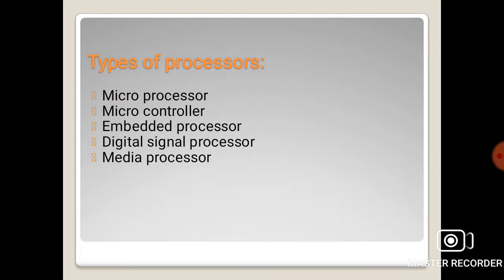Types of processor: There are totally five types of processor - microprocessor, microcontroller, embedded processor, digital signal processor, and media processor. Out of these five processors, there are two most important processors: microprocessor and microcontroller.